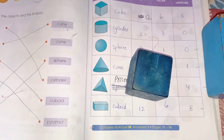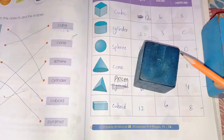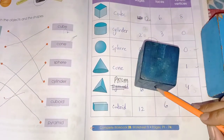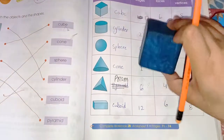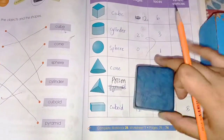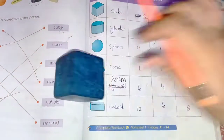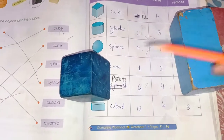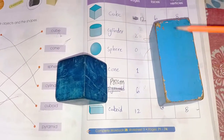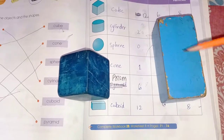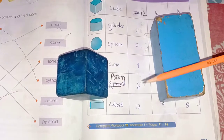Now number of faces — how many faces does a cube have? Let's count: 1, 2, 3, 4, 5, and the last one is 6. So the cube has 6 faces. Cube and cuboid have the same numbers. The only difference between them is the size, but the edges, number of faces, and vertices are the same.